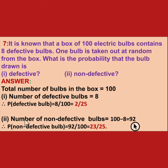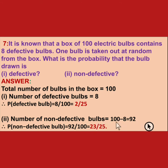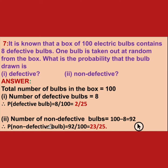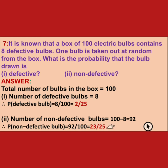Probability of non-defective bulbs: number of non-defective bulbs equals 100 minus 8, which is 92. So probability of non-defective bulbs is 92 upon 100. Simplifying by dividing by 4, we get 23 upon 25.